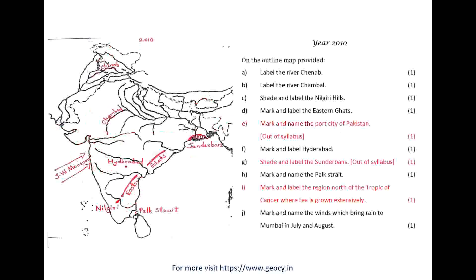Year 2010. On the outline map provided: A. Label the River Chenab. B. Label the River Chambal. C. Shade and label the Nilgiri Hills. D. Mark and label the Eastern Ghats. E. Mark and name the port city of Pakistan — out of syllabus. F. Mark and label Hyderabad. G. Shade and label the Sundarbans — out of syllabus. H. Mark and name the Palk Strait. I. Mark and label the region north of the Tropic of Cancer where tea is grown extensively. J. Mark and name the winds which bring rain to Mumbai in July and August.